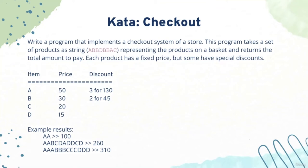Here are some examples: when we send 2 A's, we pay 100. When we send all these items, we pay 260 — because we only have one B, but we have 3 A's. In another example with 3 A's, 3 B's, 3 C's and 3 D's, we apply the discounts for A and B as necessary.